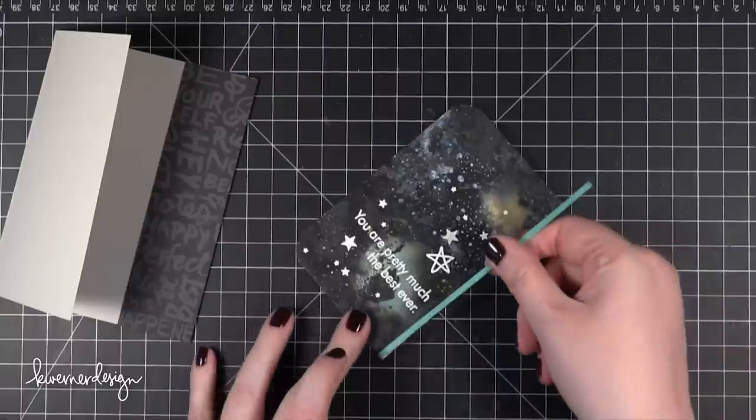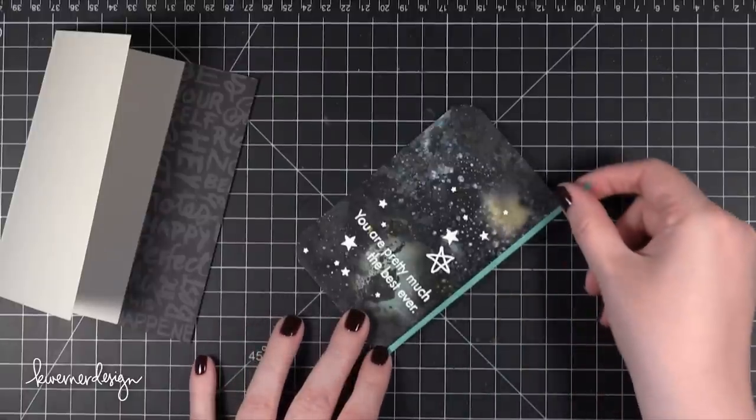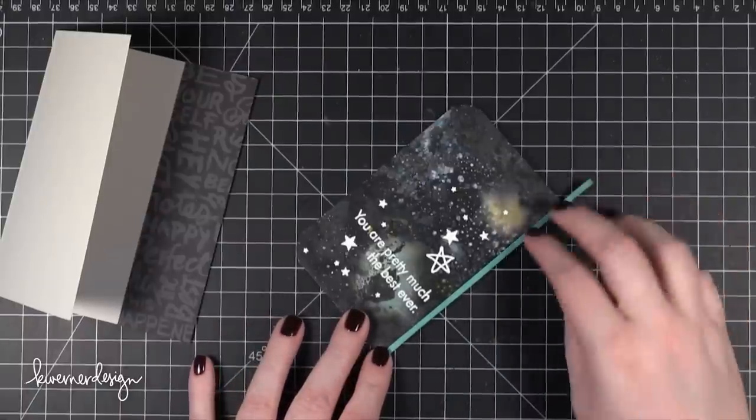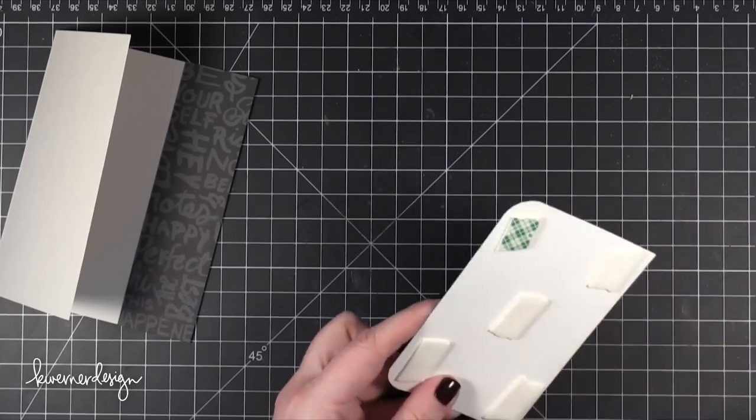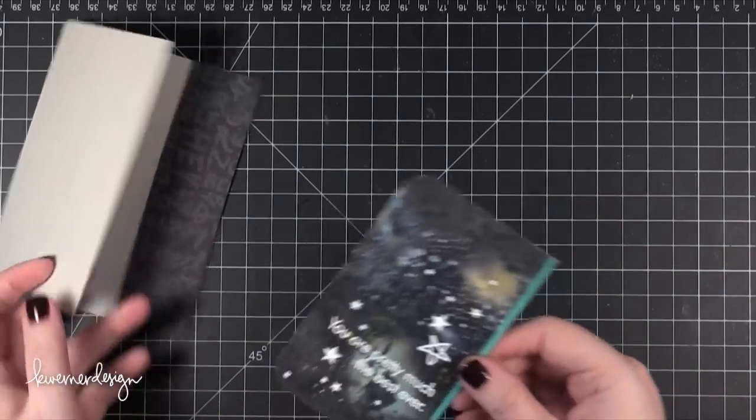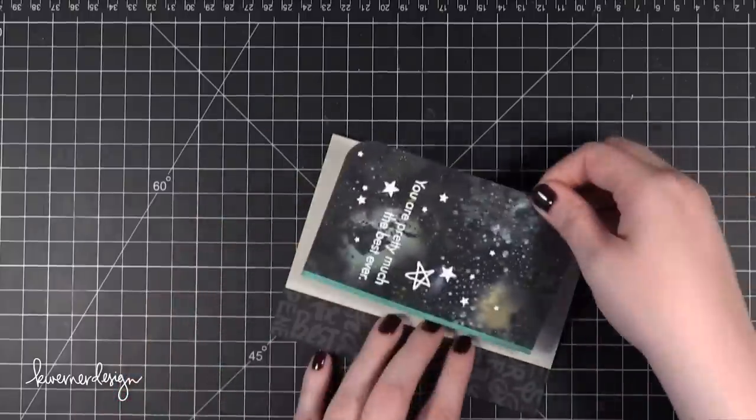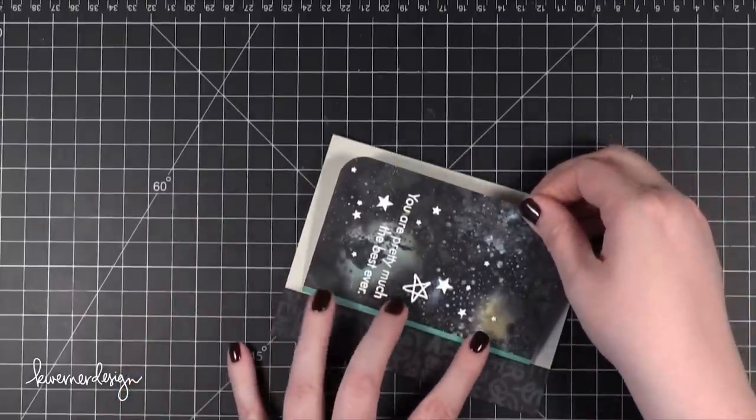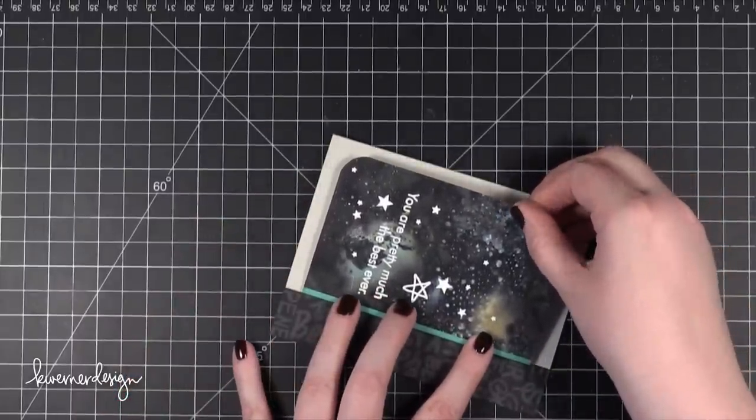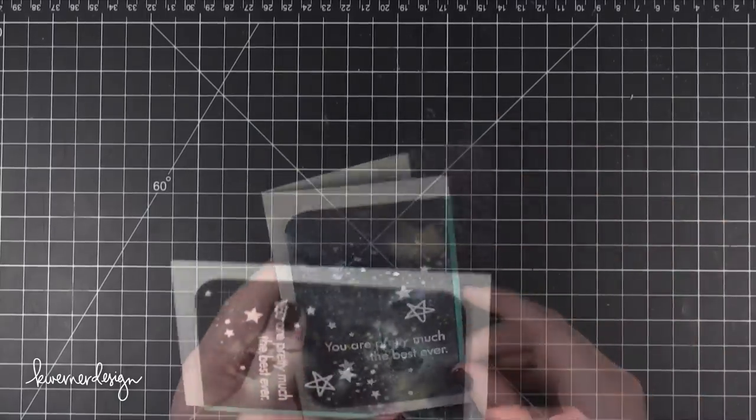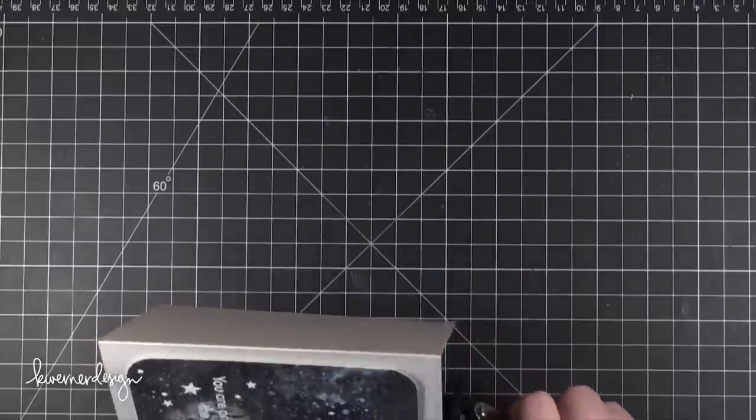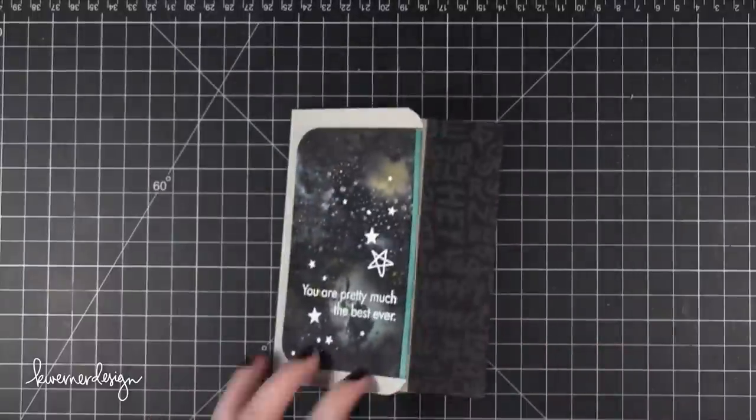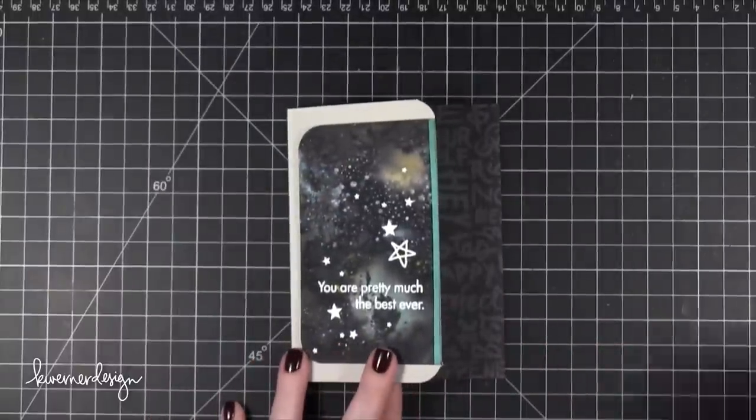You'll notice that I also rounded those outer edges of the galaxy. I used a Corner Chomper, a We R Memory Keepers Corner Chomper, and I used the 1.5 inch rounder. I'm going to be adhering this onto the front panel of the card and I'm just going to put it on here. I realized as I was editing this video that it's not entirely centered. It's a little bit more near the bottom, but that's okay. Not a huge deal. If I really wanted to I could cut off a little bit off the top. So I took my Corner Rounder and I rounded those two edges that are like the short edges of the card front. So I thought that looks kind of cool.